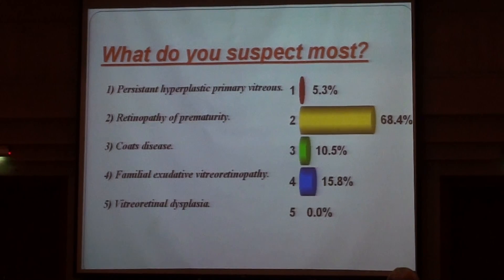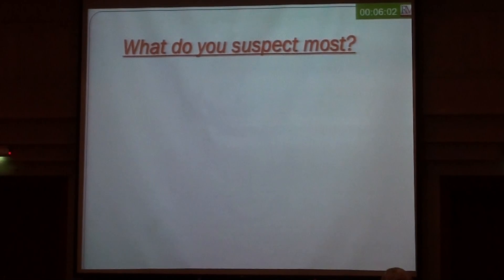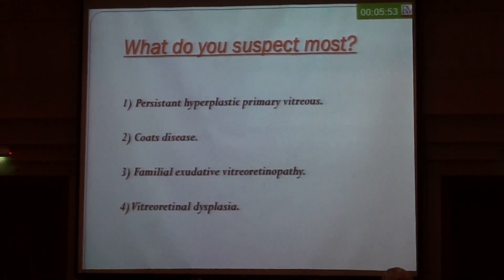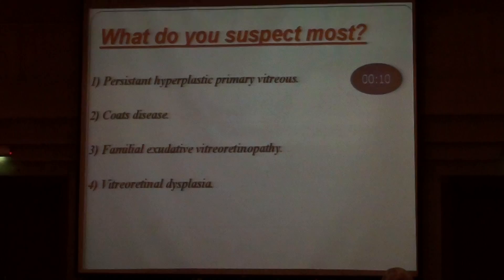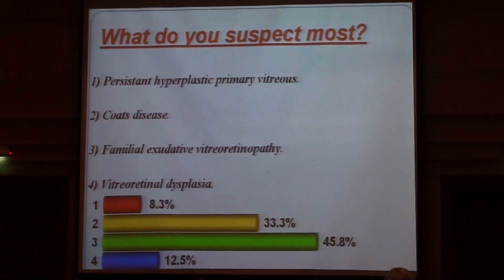The child was born with a normal gestational age and birth weight. So if we exclude retinopathy of prematurity, we suspect it should be a Coats disease or familial exudative vitreoretinopathy. The vote goes to familial exudative vitreoretinopathy.